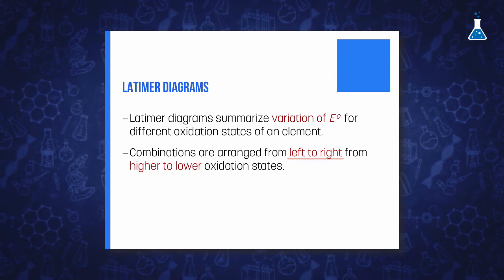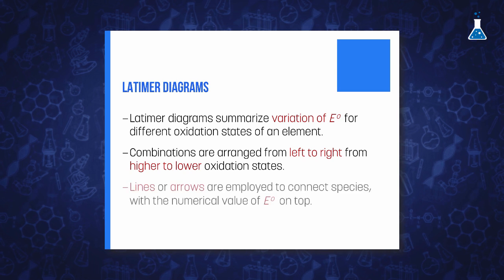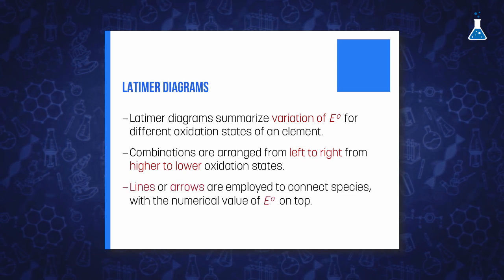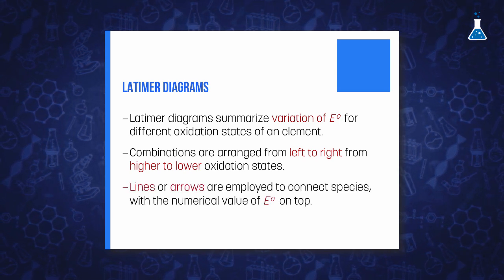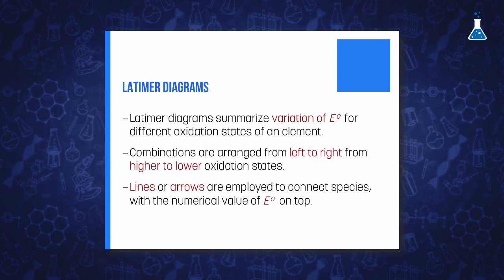The species are connected by a horizontal line or an arrow, and the numerical value of the potential is written over the arrow. For example, here we show the different combinations of chromium in acidic solution in this type of diagram.